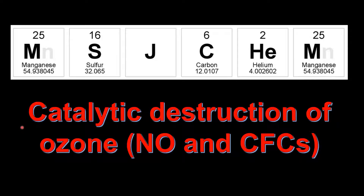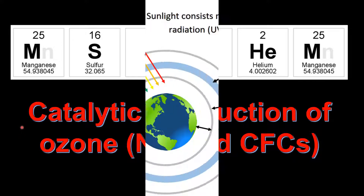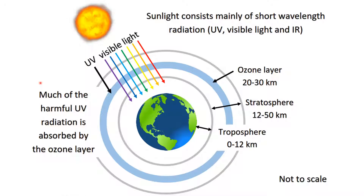This is MSJChem. In this video I'll be looking at the catalytic destruction of ozone by nitrogen monoxide and CFCs. In previous videos we've seen how ozone absorbs high energy UV radiation — a natural process in which UV radiation is absorbed by the formation and destruction of ozone. Note that the processes covered here are not natural and have resulted in the decrease in concentration of ozone in the stratosphere.